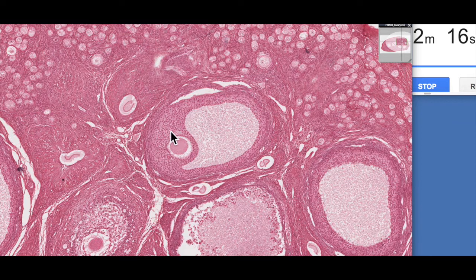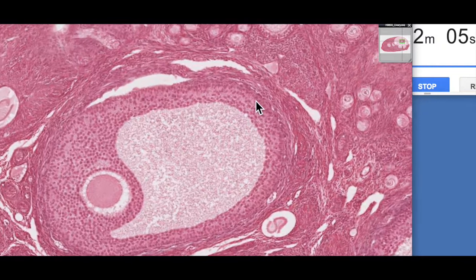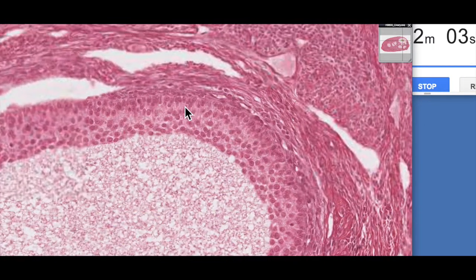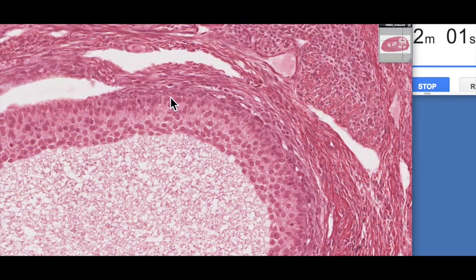At this stage you can see it's eccentrically located to one side of the follicle. If we zoom in a little bit here, there'd be a basement membrane here, not always readily visible.